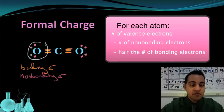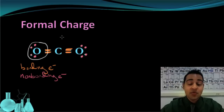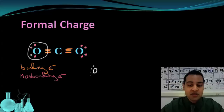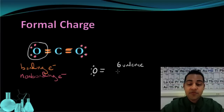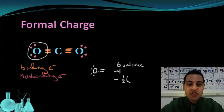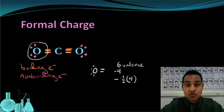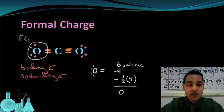First, let's look at this oxygen. You may notice this oxygen is exactly the same as the other oxygen in terms of the number of bonds and free electrons around it, so finding one gives us both. Oxygen originally starts with 6 valence electrons. We subtract the number of non-bonding electrons, which is 4, and then subtract half of the bonding electrons — there are 4 bonding electrons in the 2 bonds attached to it, so half of 4 is 2. The formal charge for oxygen is 6 minus 4 minus 2, which equals 0. So the formal charge on each oxygen is 0.